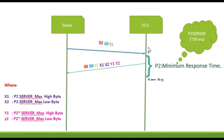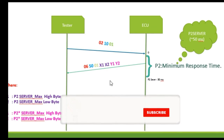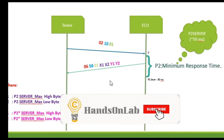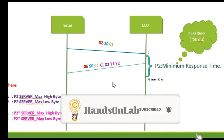Here you can see the P2 server is 50 milliseconds. Normally this 50 milliseconds is configured in ARXML files. So when the tester sends a request, the ECU processes it and sends back a response to the tester within 50 milliseconds — the tester gets a fast response. Let's see the next slide: what will happen if it exceeds more than 50 milliseconds?